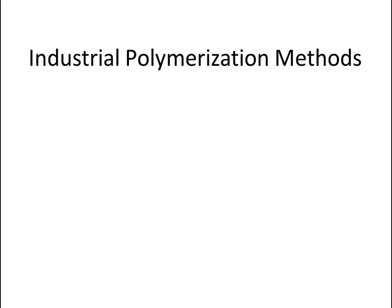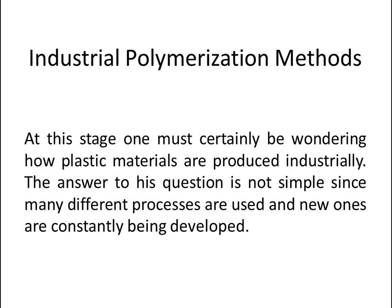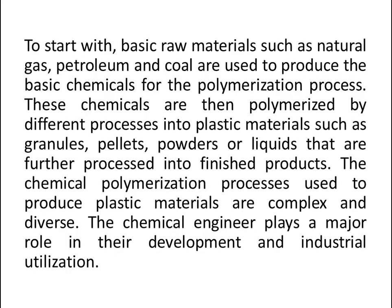Now let's talk about industrial polymerization methods. One must certainly be wondering how plastic materials are produced industrially. The answer is not simple since many different processes are used and new ones are constantly being developed. To start with, basic raw materials such as natural gas, petroleum, and coal are used to produce the basic chemicals for the polymerization process.